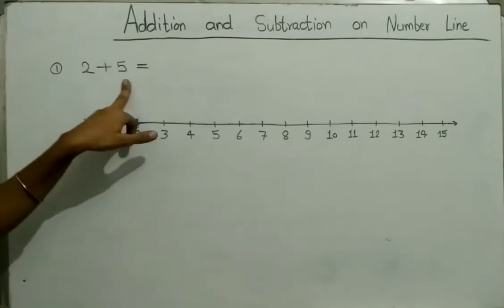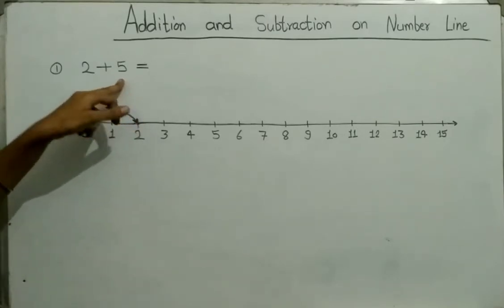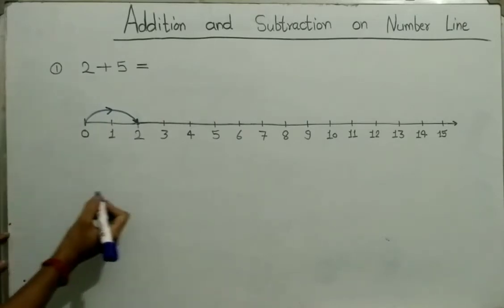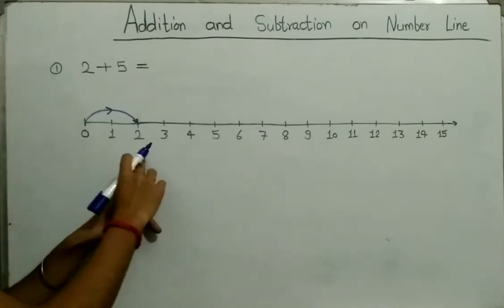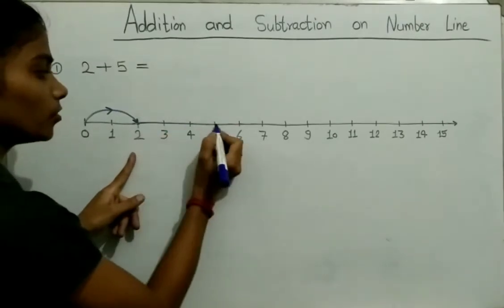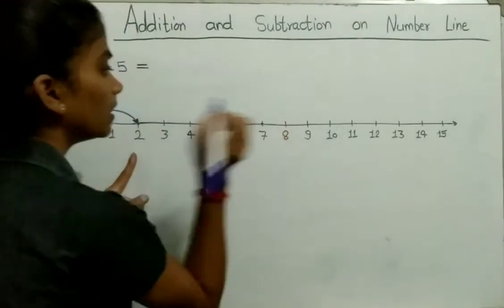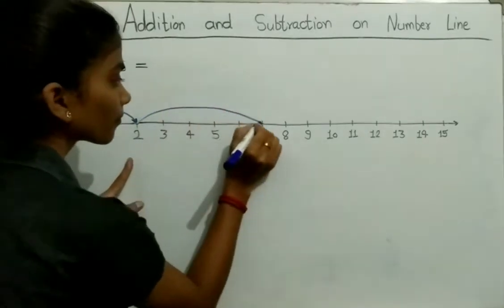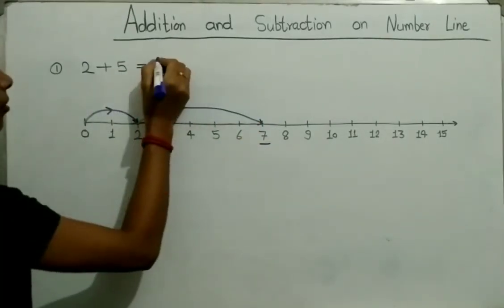And the second number is 5. So we will jump 5 more steps to the right from 2: 1, 2, 3, 4, 5. We reach at 7. So the sum of 2 and 5 is equal to 7.